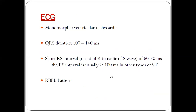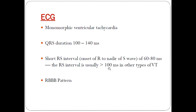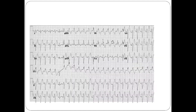Although most episodes occur at rest, exercise, emotional stress, and catecholamine infusion can act as triggers. The ECG changes seen are as monomorphic ventricular tachycardia. In ventricular tachycardia generally there is a broad complex QRS, but here the QRS is narrow or normal — that is 100 to 140 milliseconds — and there is a short RS interval, from onset of R wave to nadir of S wave, of around 60 to 80 milliseconds, whereas it is usually more than 100 milliseconds in other types of VT.